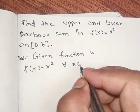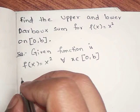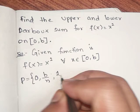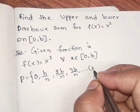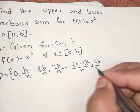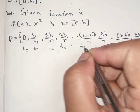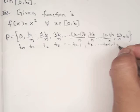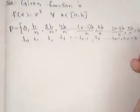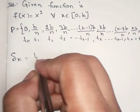Now we take the partition P = {0, b/n, 2b/n, 3b/n, ..., (k-1)b/n, kb/n, ..., (n-1)b/n, nb/n = b}. This is the partition, where t₀, t₁, t₂, t₃, ..., t_{k-1}, t_k, ..., t_{n-1}, t_n = b.